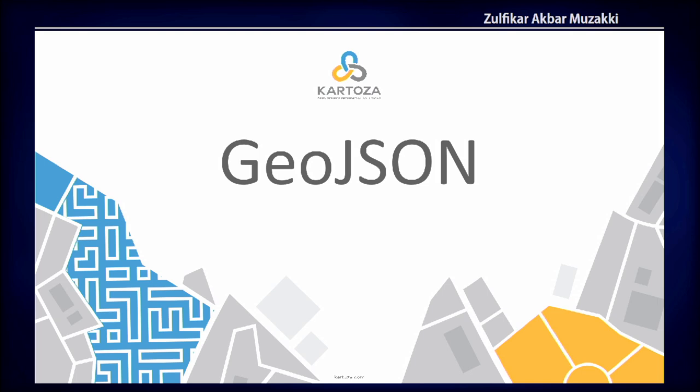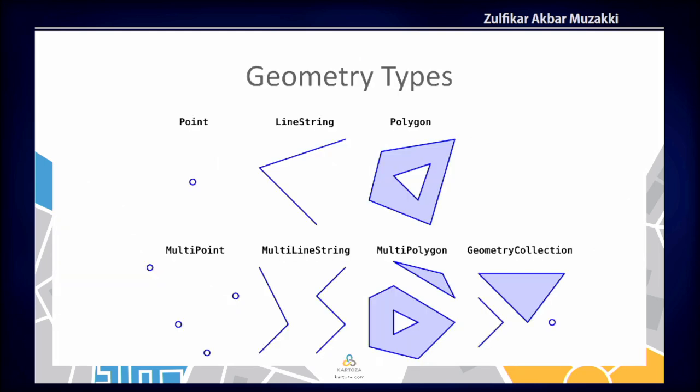Let's first talk about GeoJSON. GeoJSON is a format to encode a variety of geographic data structures based on JSON. It supports seven geometry types: Point, LineString, Polygon, MultiPoint, MultiLineString, MultiPolygon, and GeometryCollection.